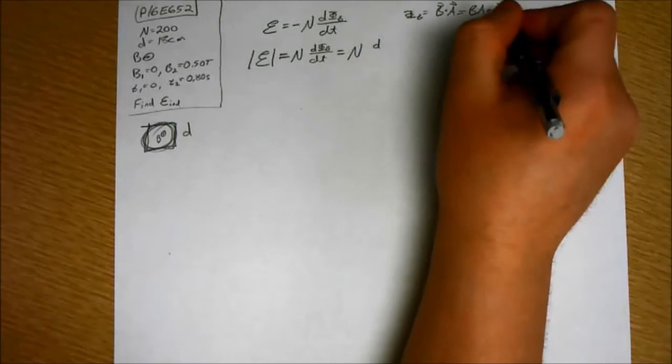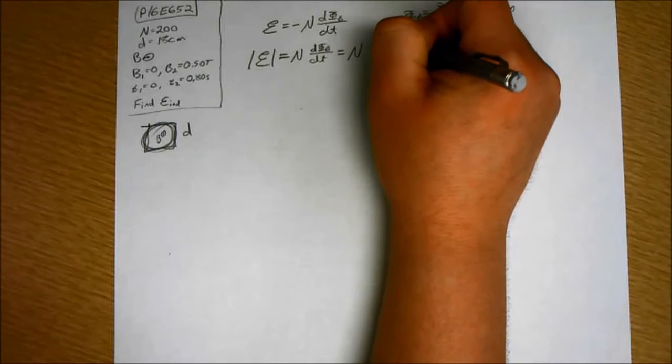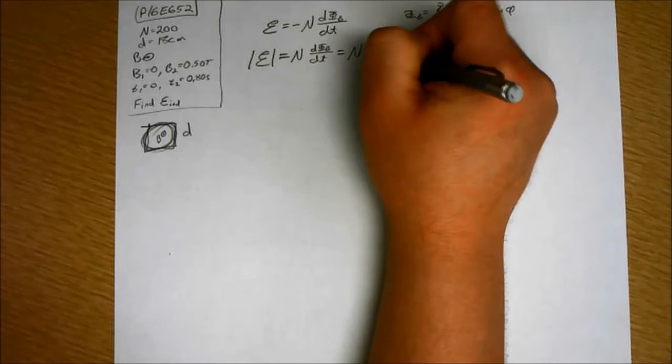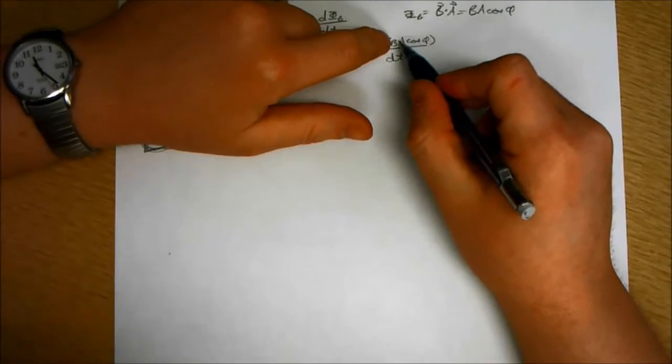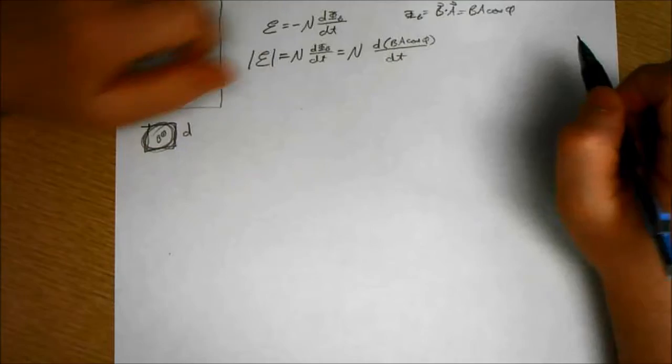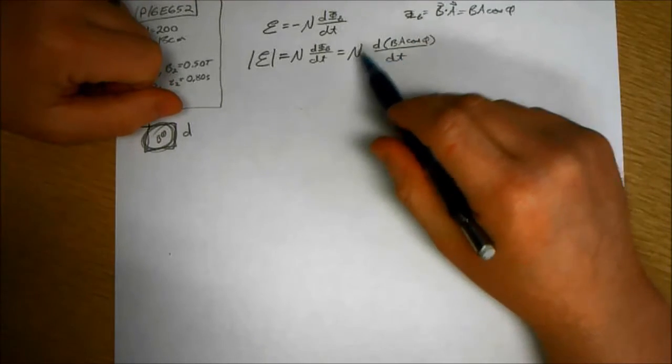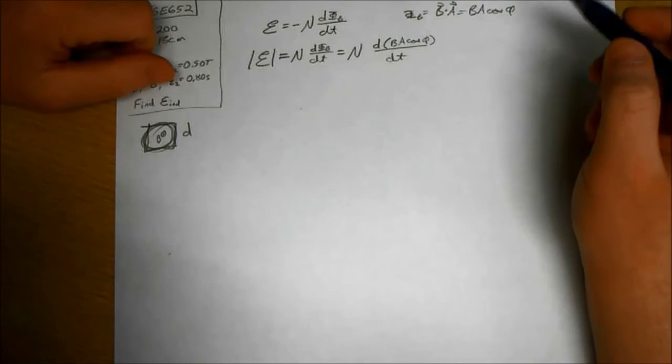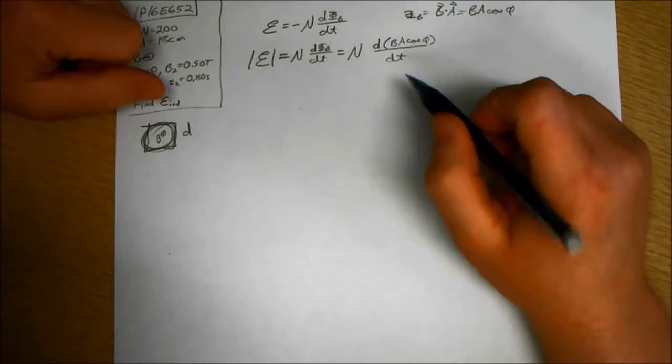So I'm going to write it in this form, which is what we will usually do. So the derivative of B A cosine phi over dt. So we're looking at the time rate of change of this whole quantity. All these things multiplied together. If all these things are changing, they're all playing a role in the flux and therefore the induced EMF.